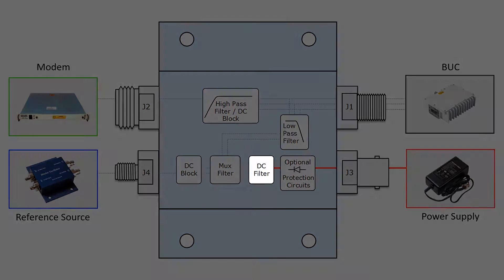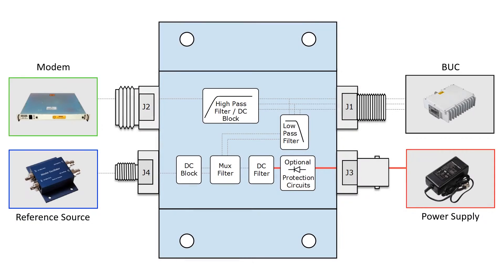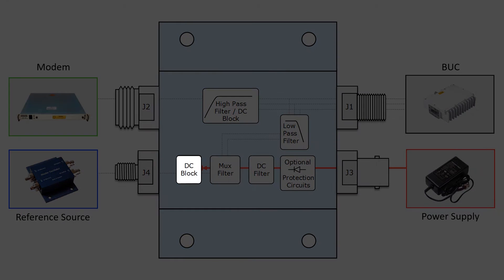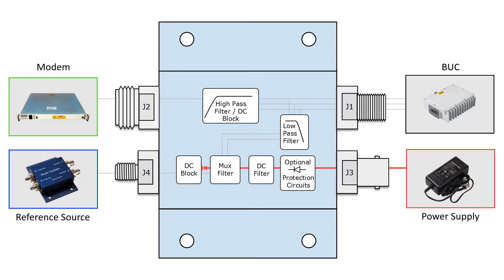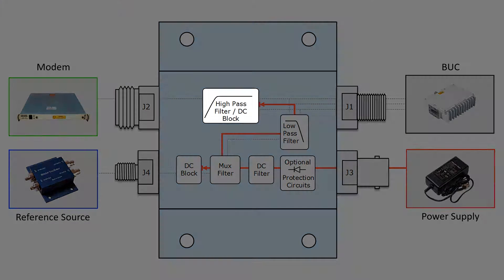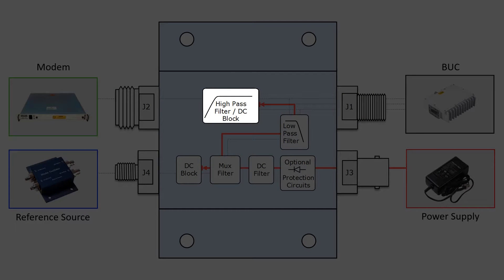DC power is filtered to remove out-of-band signals. The DC is blocked from feeding back into the 10 MHz source. DC must be isolated from the receiver or modem, or the receiver or modem could be harmed.